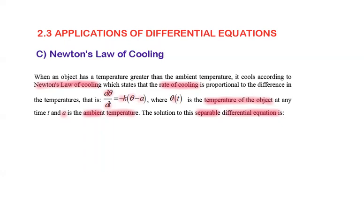Separate the variables: 1 divided by (θ minus a) dθ equals negative k dt, and integrate both sides at the same time. The integral of 1/(θ minus a) equals ln(θ minus a) equals negative kt plus a constant c.